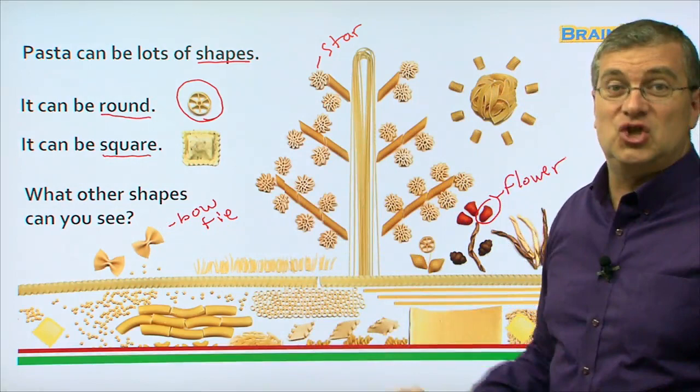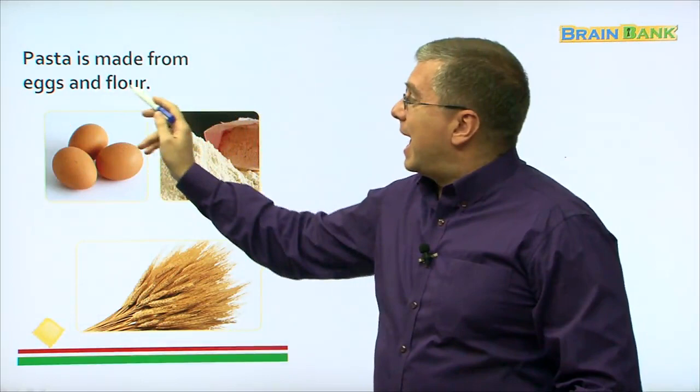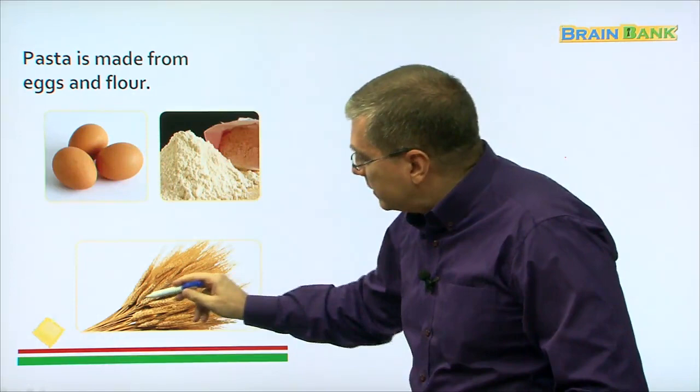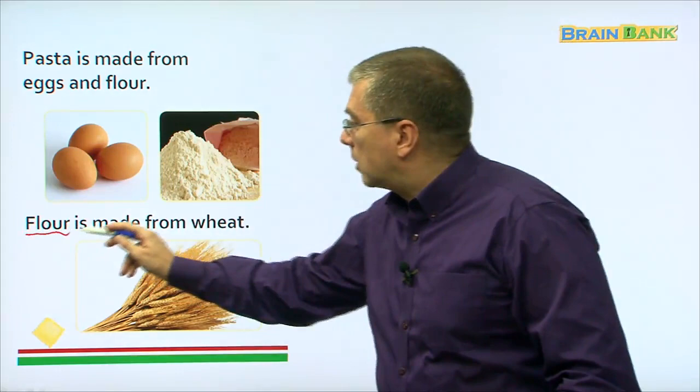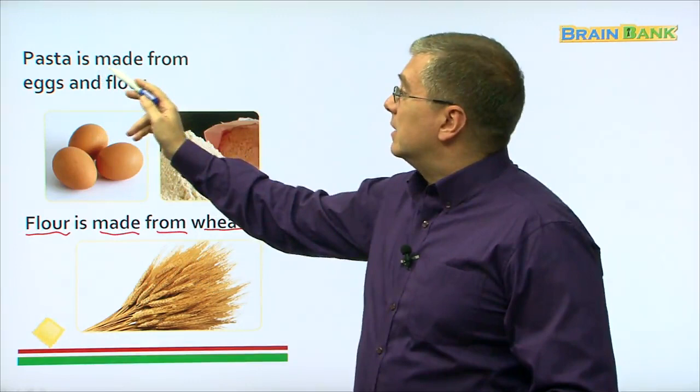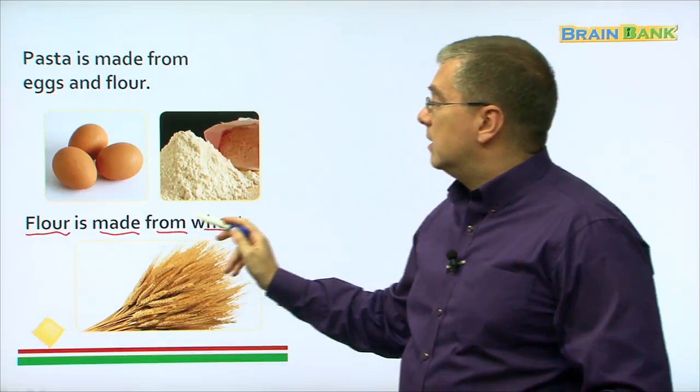Pasta is made from eggs and flour. Here we see eggs, here we see flour, and this is wheat. Flour comes from wheat — flour is made from wheat. Pasta is made from eggs and flour; flour is made from wheat.